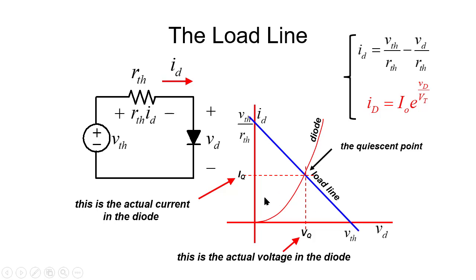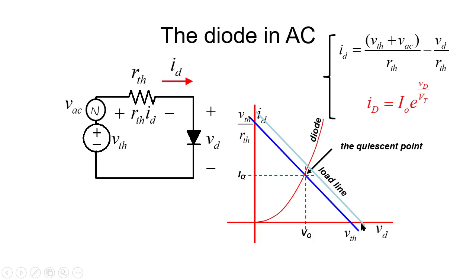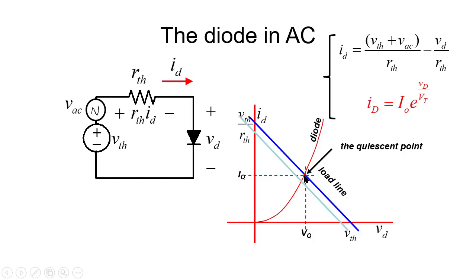The load line is rooted at V_th on the horizontal axis and at V_th / R_th on the vertical axis. If we superimpose a tiny AC voltage — much smaller than V_th so the diode doesn't turn off — that small signal will move the load line left and right. Sometimes it's V_th + V_ac, sometimes V_th − V_ac. That oscillation makes the operating point travel in a small neighborhood around the quiescent point.